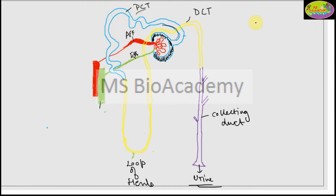When blood comes through the afferent arteriole, it contains sodium, ions, water, glucose, nutrients, RBCs, and proteins — all needing filtration. In the Bowman's capsule, pressure pushes blood across the surface, causing diffusion of small molecules: sodium ions, calcium, chloride ions, amino acids, glucose, and water will come through, along with waste products like urea and uric acid.